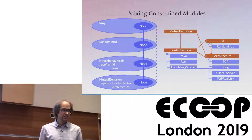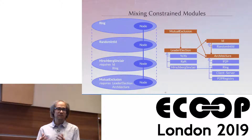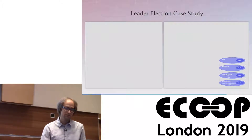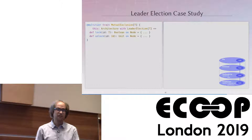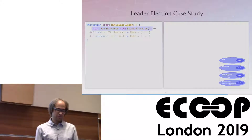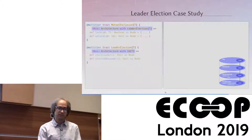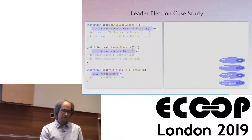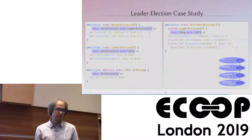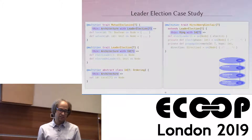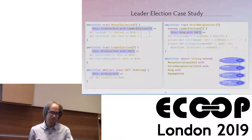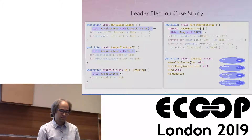The implementation uses Scala self-type annotations to express constraints: mutual exclusion has constraints on architecture and leader election; leader election has constraints on architecture and ID; and ID has a constraint on architecture. Hirschberg-Sinclair extends leader election as a concrete implementation. We stack it with a random integer ID implementation and define the complete system over a ring architecture. Finally we mix together the modules to define the mutual exclusion functionality for a node peer type, and the compiler checks that all constraints are satisfied.